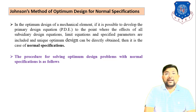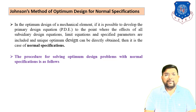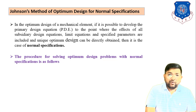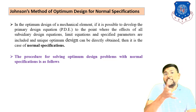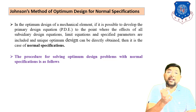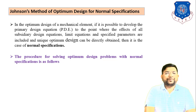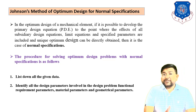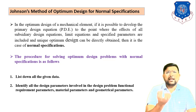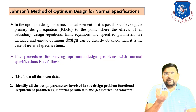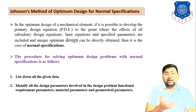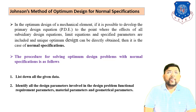The procedure for solving an optimum design problem with normal specification is as follows. Step one: list down all the given data — the strength of the material, the stress, the modulus of rigidity, the density of material, and all other relevant data. Step two: identify all the design parameters involved in the design problem — functional requirement parameter, material parameter, and geometrical parameter.